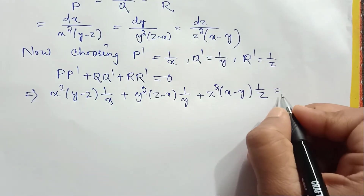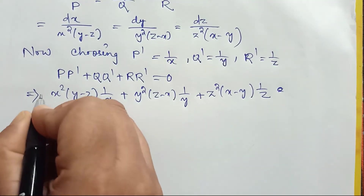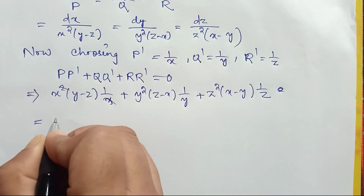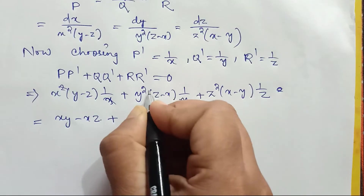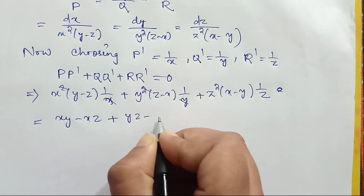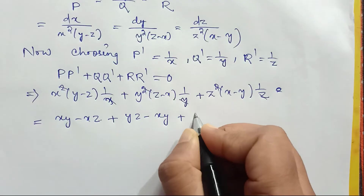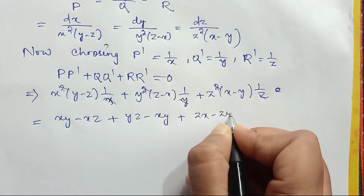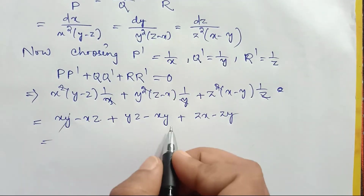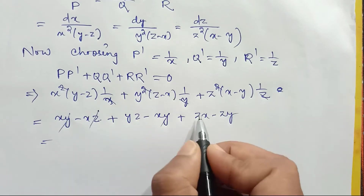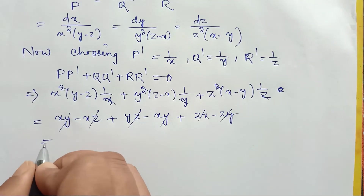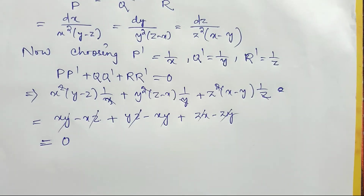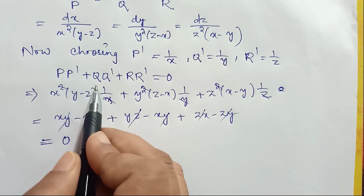This equals xy - xz + yz - xy + zx - zy, which simplifies as all terms cancel pairwise, giving 0.